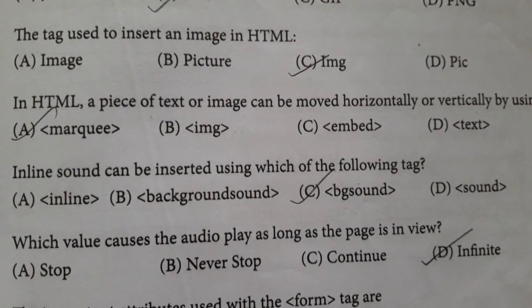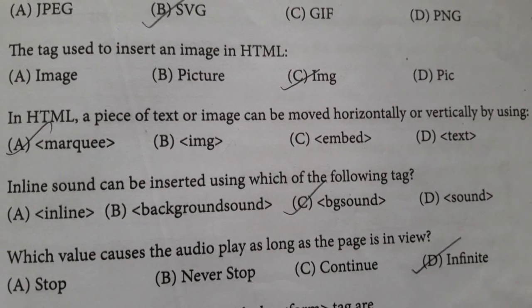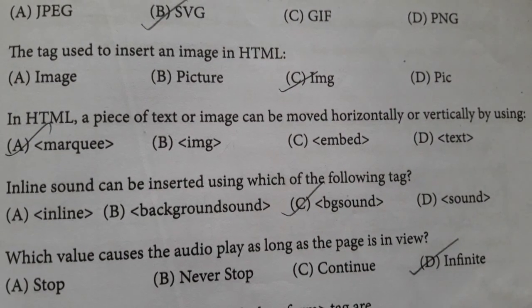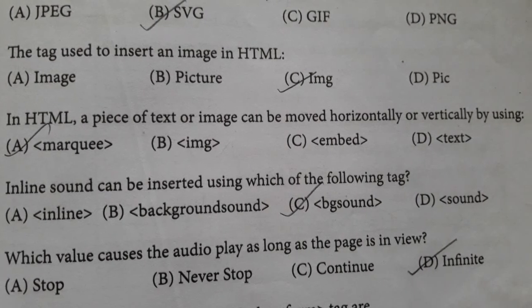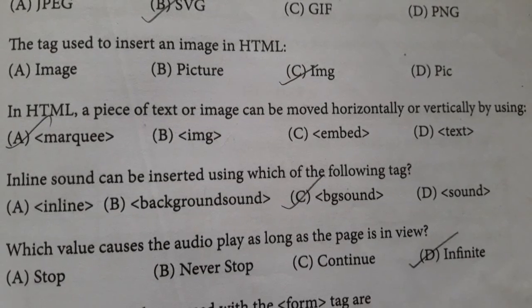Third question. In HTML, a piece of text or image can be moved horizontally or vertically by using Option A marquee, Option B IMG, Option C embed, Option D text. Answer is Option A, marquee.